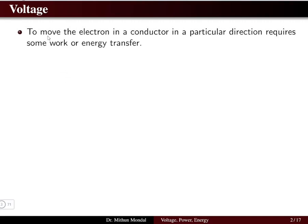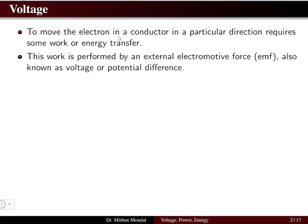When we need to move an electron in a conductor in a particular direction, it will require some amount of work or energy. An electron can be transferred from one point to another in a conductor with the help of work or energy being done on the electron. This work is performed by an external source of EMF, which is known as the electromotive force.